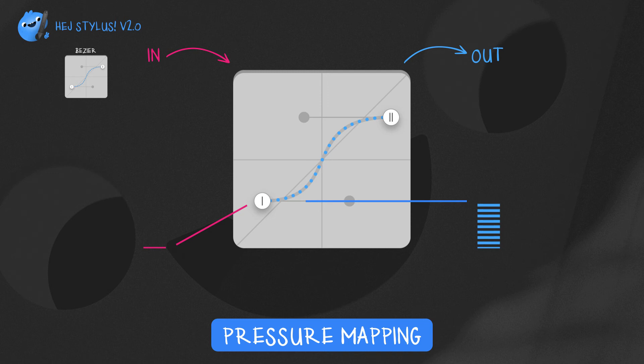Point 1 is where the pressure input of 0% is mapped to, and point 2 is where 100% input is mapped to.